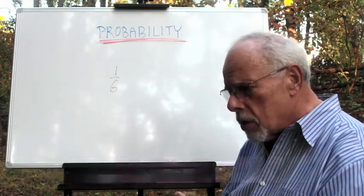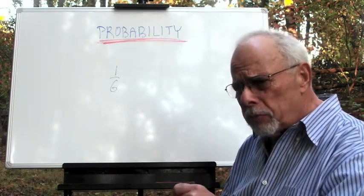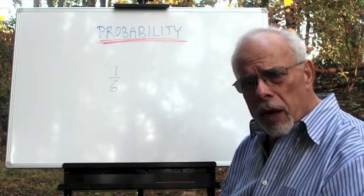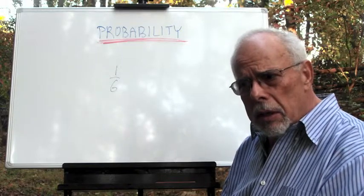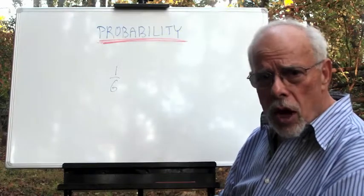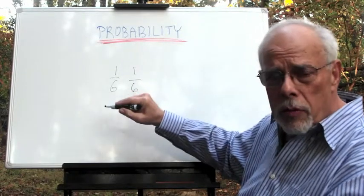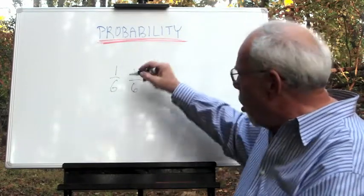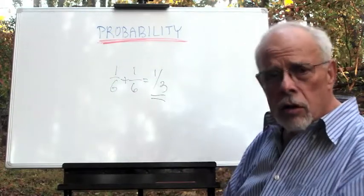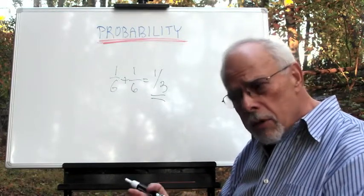It's one thing to ask ourselves what's the chance of one number to appear, but what about the chance for either the number six or the number five to appear? The number six is one-sixth chance to appear. Number five, one-sixth. Either one of them would appear on top of the dice. The chance is the addition of the two probabilities. Maybe intuitive, maybe not.